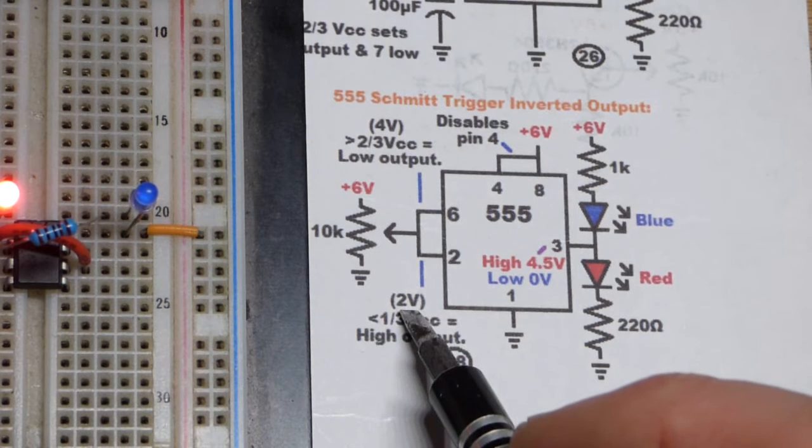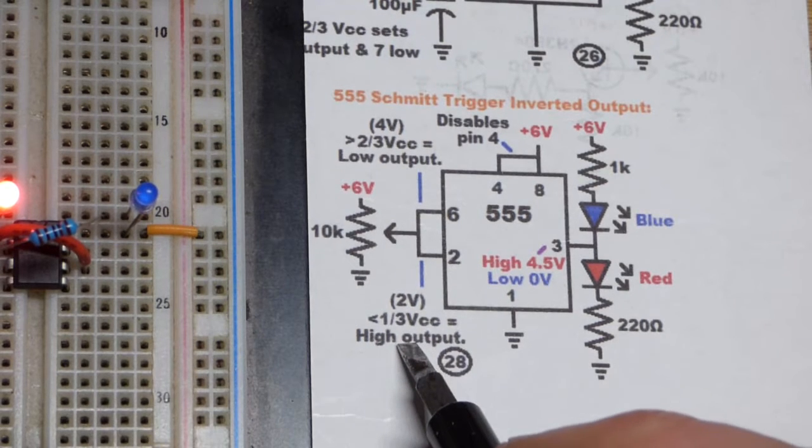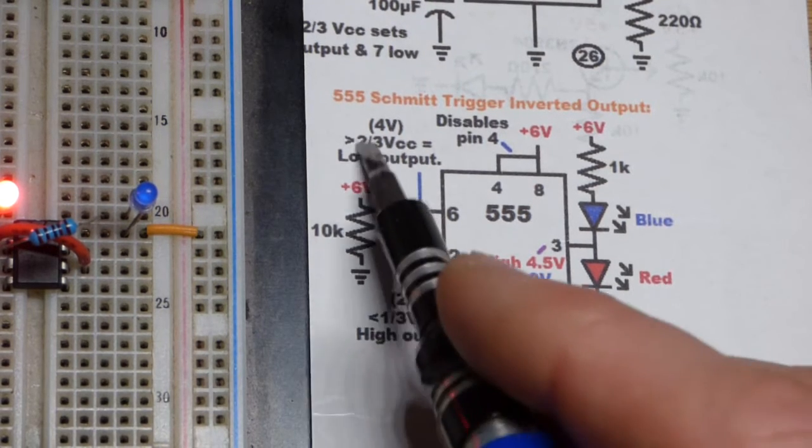Going above that set the output low, and then when it came to two volts we had to go down below about two volts, at least touch two volts, to set the output high.